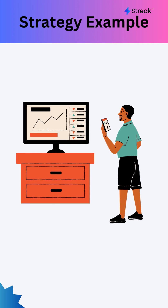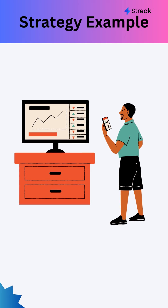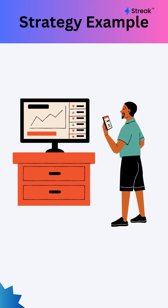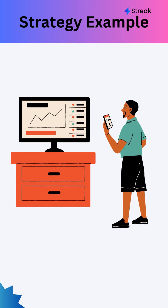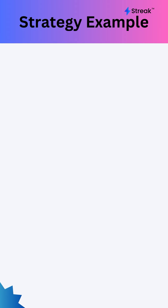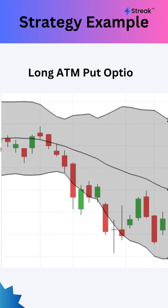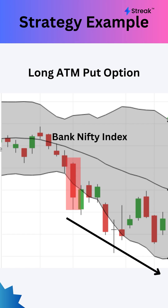Using a simple strategy, we'll learn how we can create and backtest an option strategy to take a long position on an at-the-money put option whenever the Bank Nifty index crosses below the lower Bollinger Bands. This indicates that the volatility is expanding on the downside.